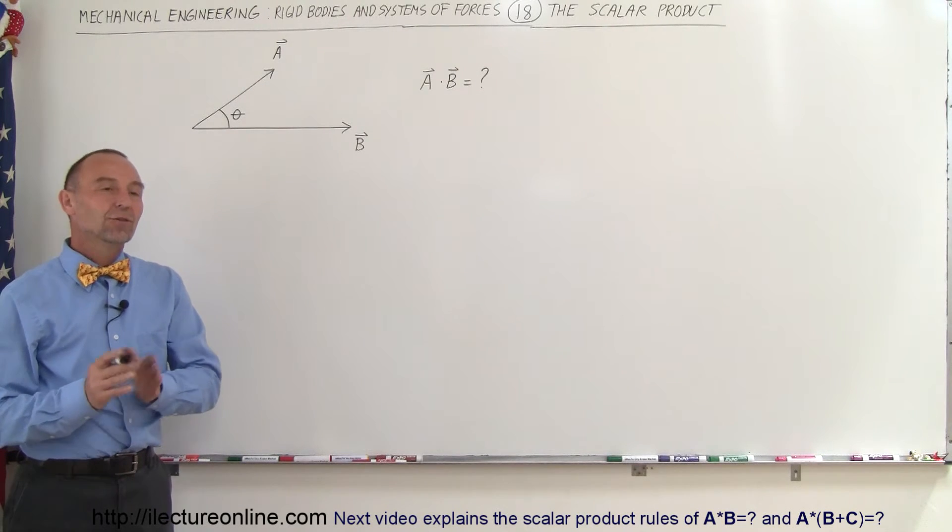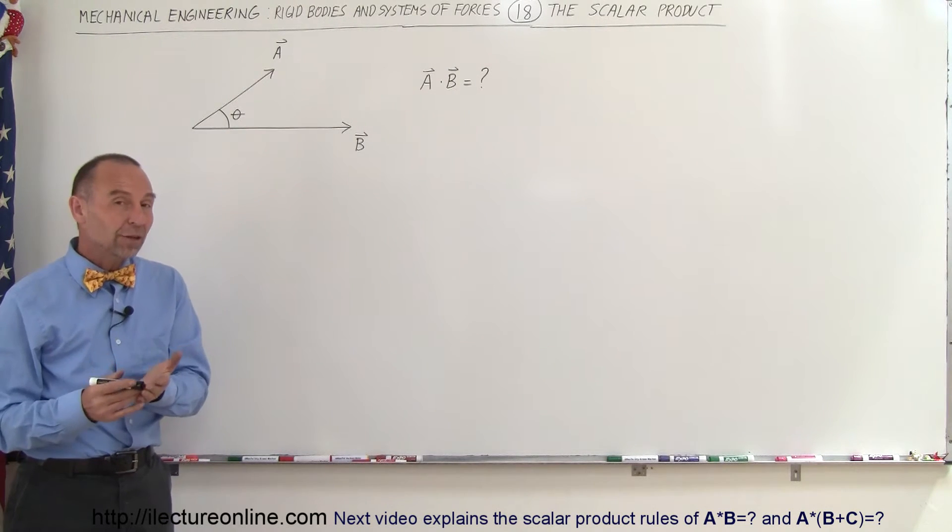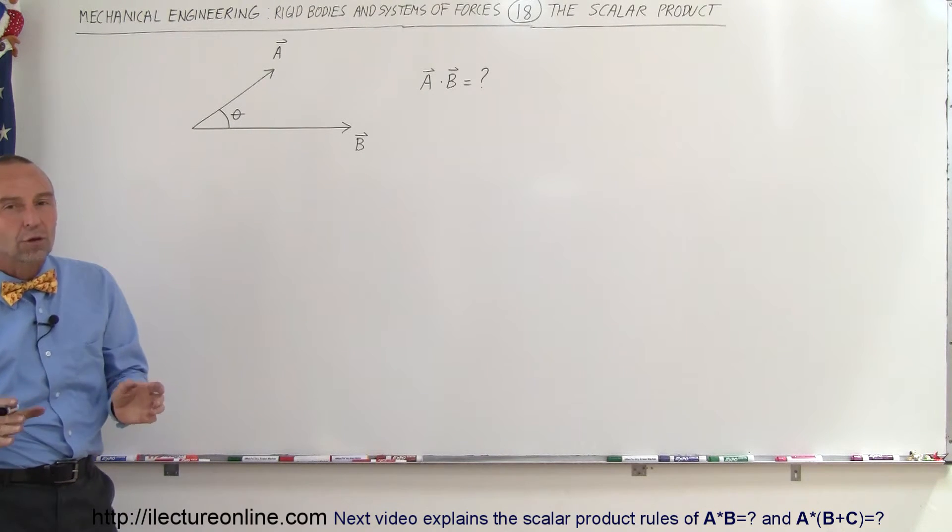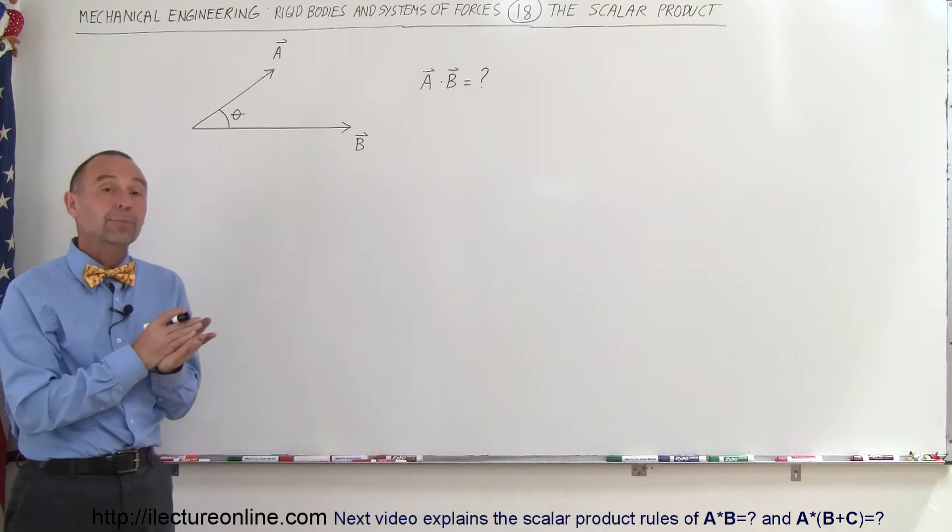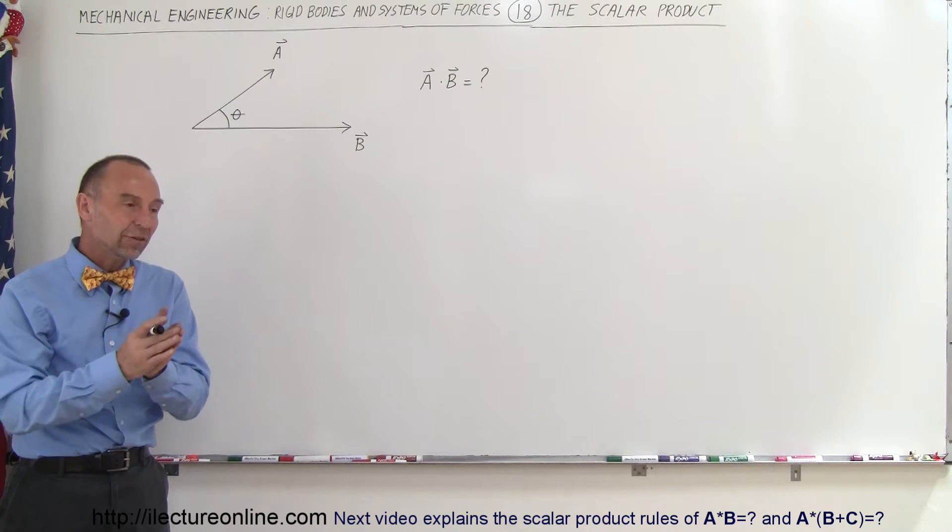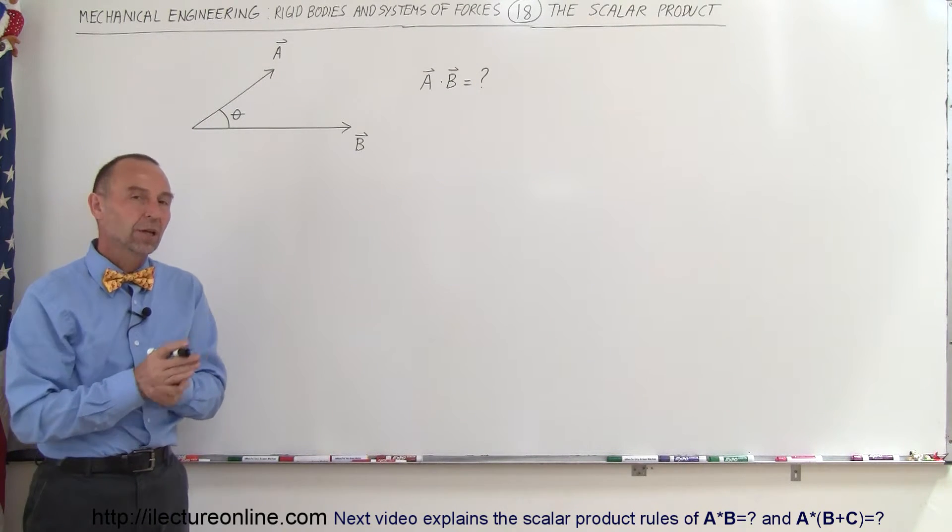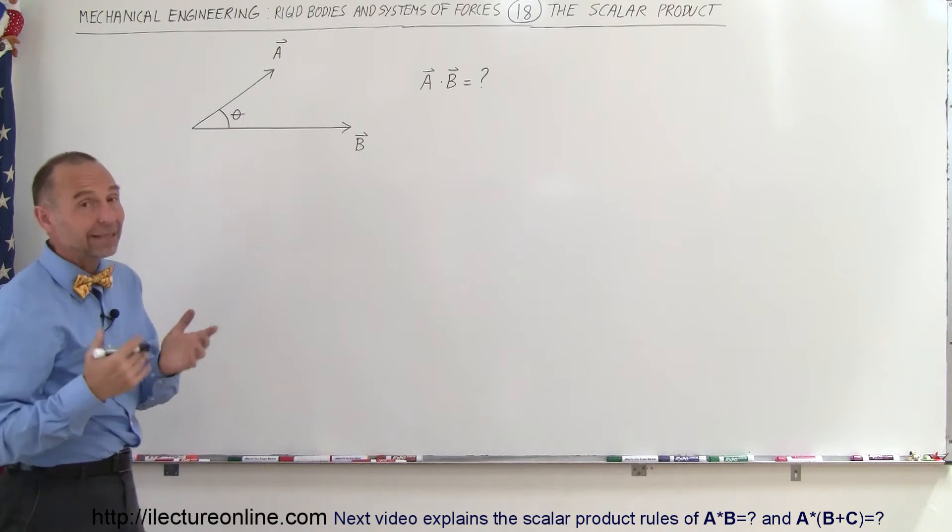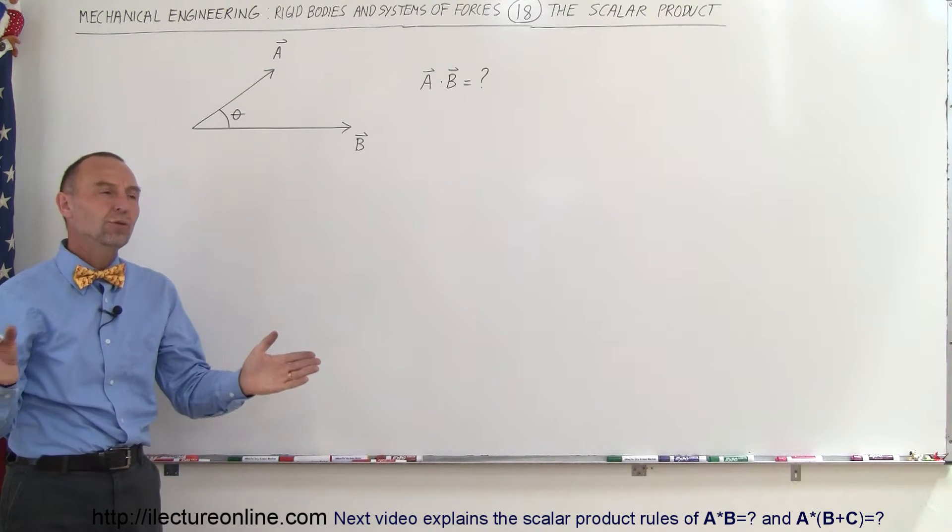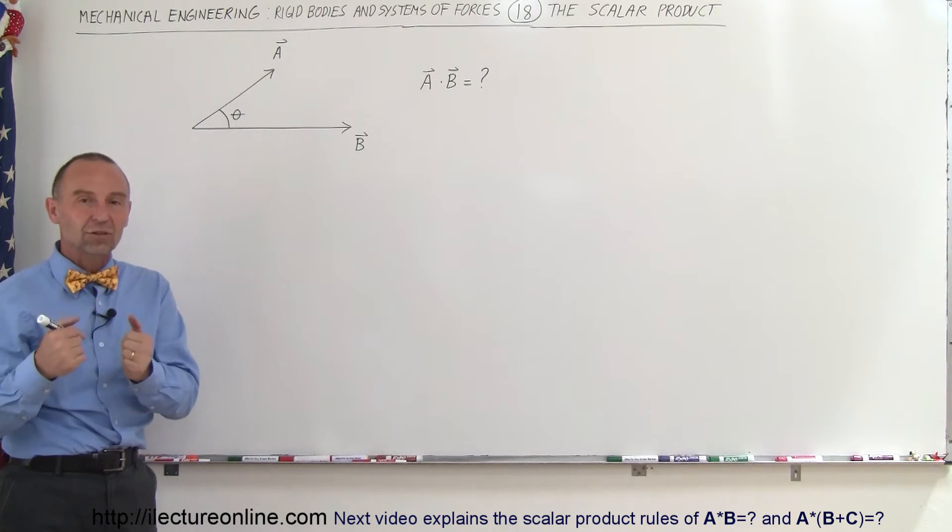Welcome to ilectureonline. So far we've talked about vector products, but now we will also talk about what we call scalar product. Remember, vector products were the products between two vectors so that the result of that product was another vector. A scalar product, the name kind of gives it away, is a product between two vectors so that the result is actually a scalar, a non-vector quantity.